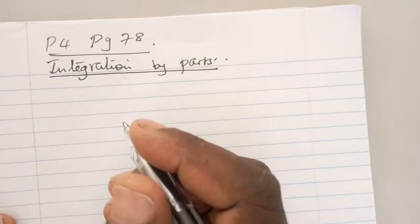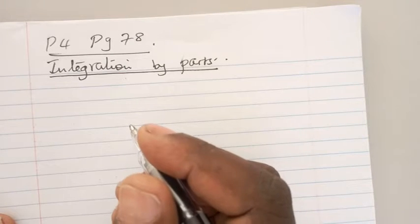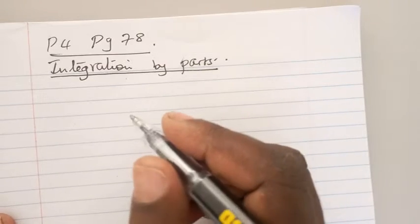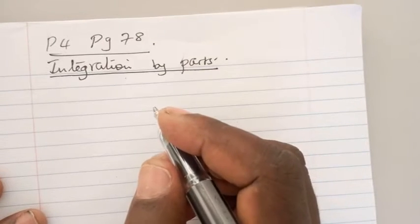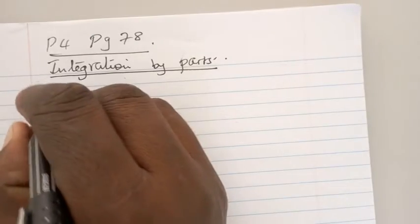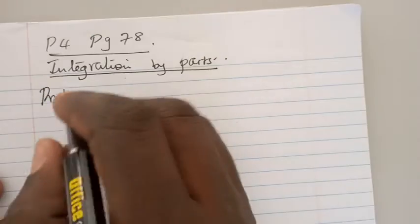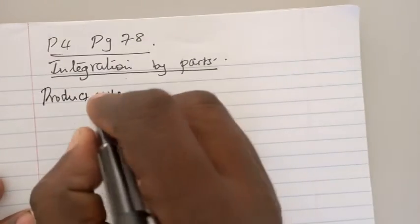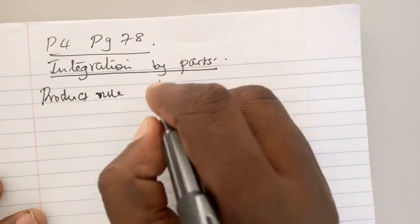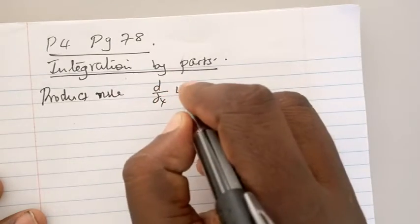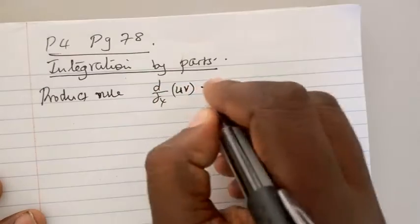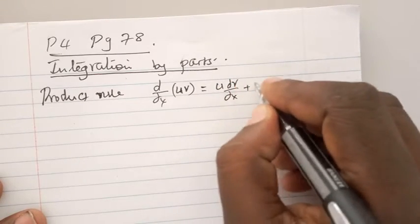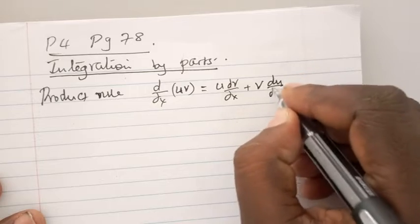We are told that you can rearrange the product rule for differentiation. Let us first remind ourselves about the product rule. How does the product rule look like? d/dx of uv is given by u dv/dx plus v du/dx.